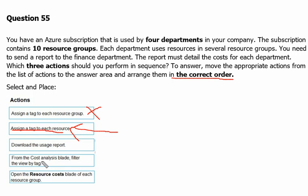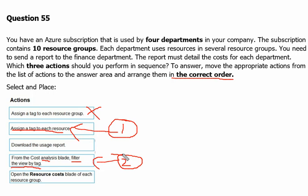Step two is: from the Cost Analysis blade, filter the view by tag. We've seen in the Azure portal how to apply the filter on the Cost Analysis blade and view the results. Step three is to download the usage report from Cost Management plus Billing. So the sequence is: step one — assign tag to each resource; step two — filter by tag in Cost Analysis; step three — download the report.